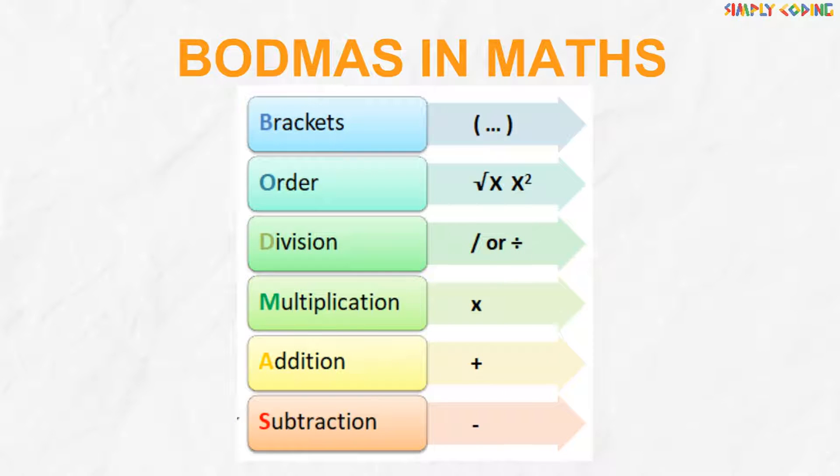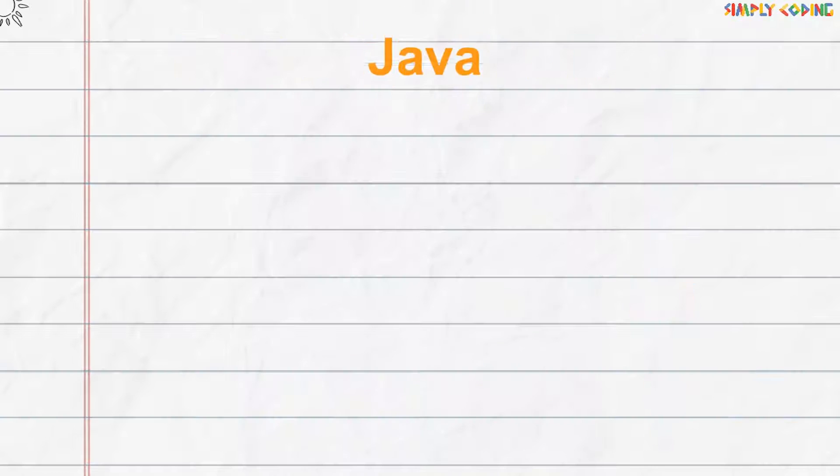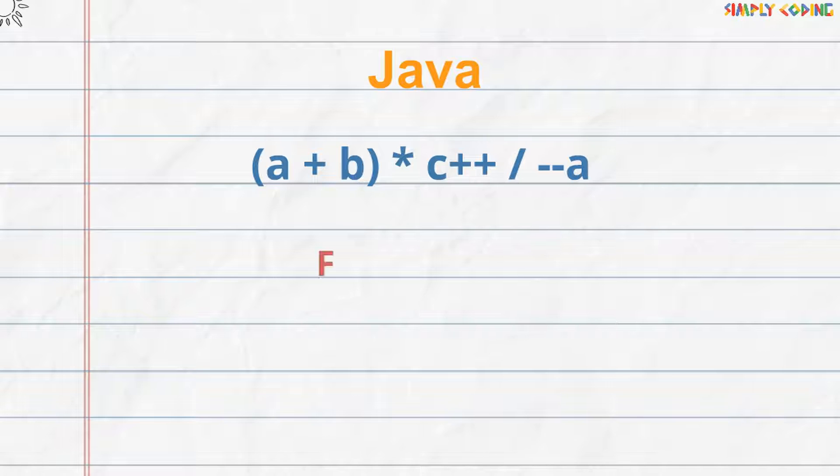Now, if you have already studied BODMAS in maths, you might remember seeing how it explains the order of operations to solve an expression. Similarly, in Java, when there are multiple operators in an expression, Java has well-defined rules for specifying the order in which operators are evaluated.